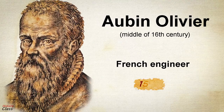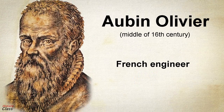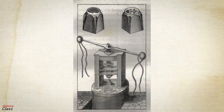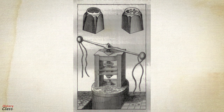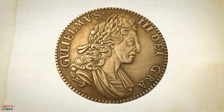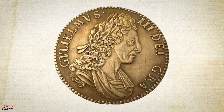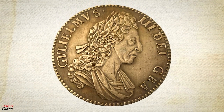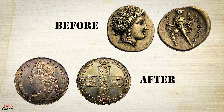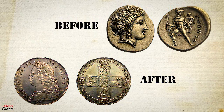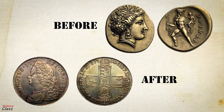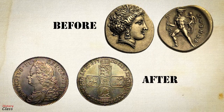In 1553, the French engineer Aubin Olivier introduced screw presses for striking coins. This mint produced well-struck and perfectly round gold and silver coins. Until this invention, the coinage techniques used in Europe had not progressed from the hammered coinage of ancient Greece.